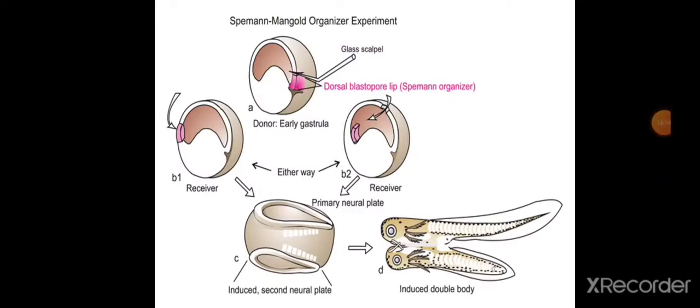The two species of newts that Spemann and Mangold used for their transplantation experiments were Triturus taeniatus and Triturus cristatus.